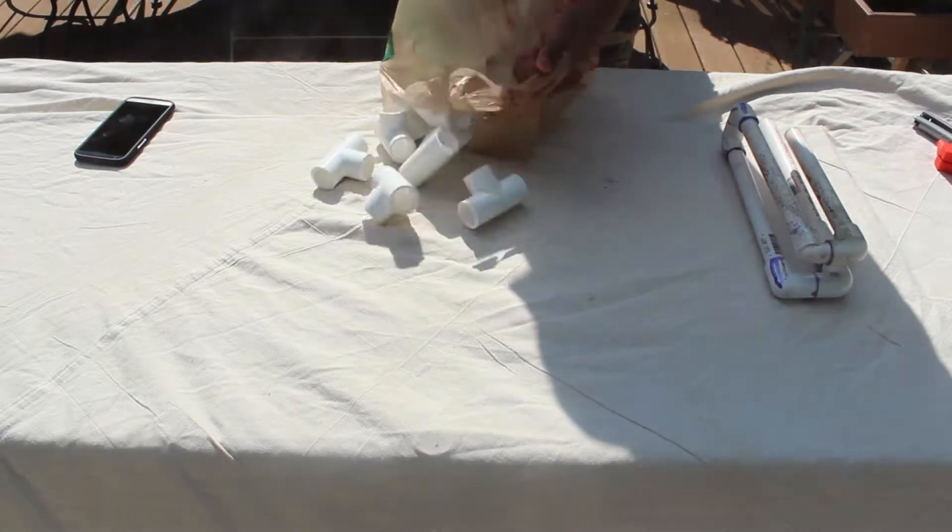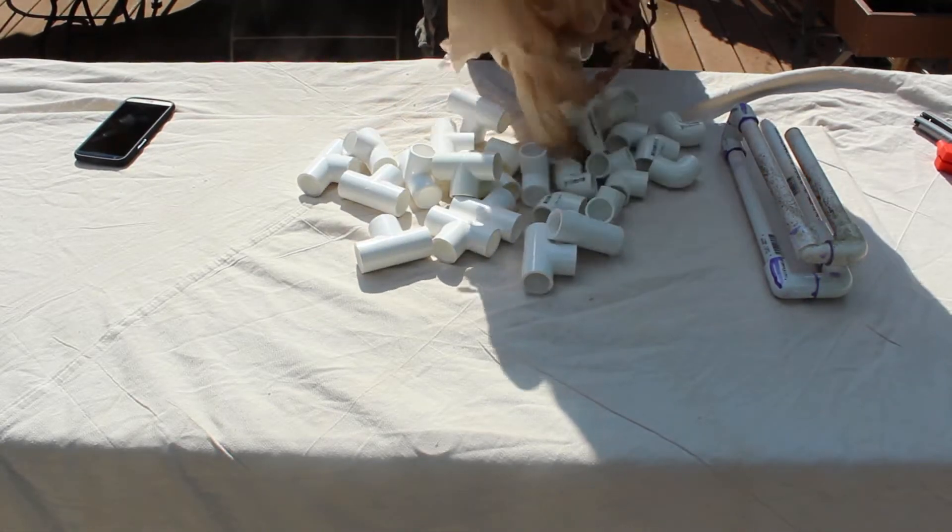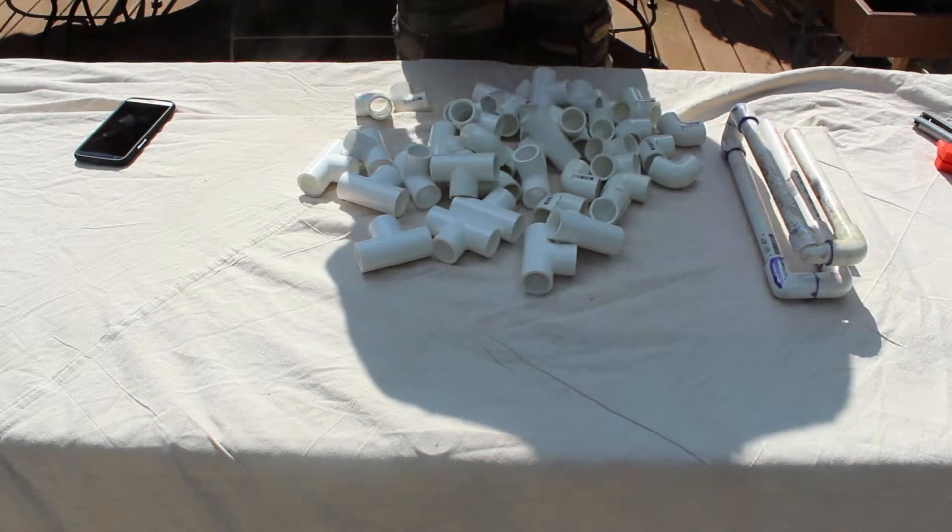First, we need to gather our supplies. Each siphon needs one tee, six elbows, and around four feet of PVC piping.